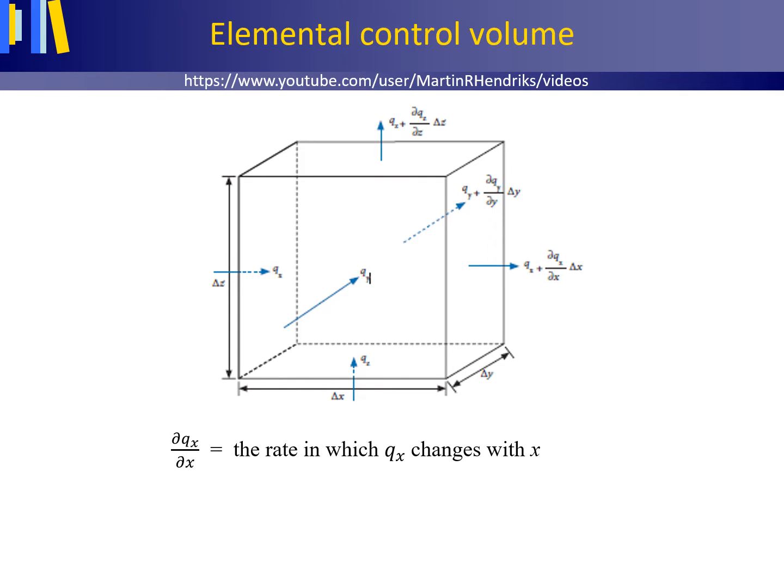dQx/dx is the rate in which Qx changes with x. By multiplying this rate of change with the section delta x where the change takes place, we obtain the total change over this section in meter per day. The same reasoning is applied in the y and z directions.